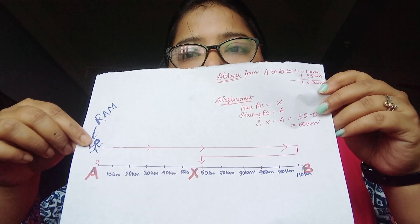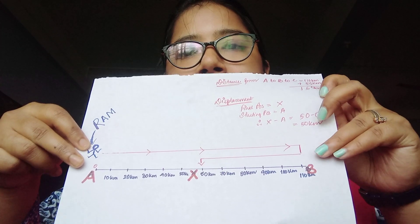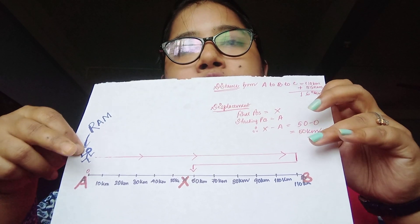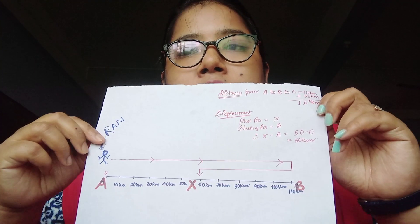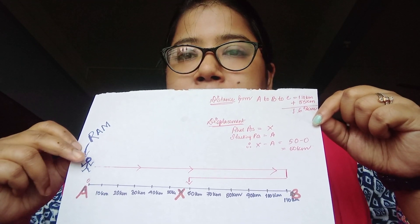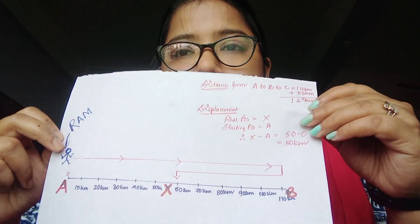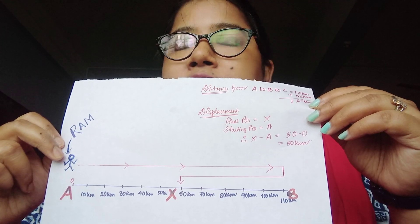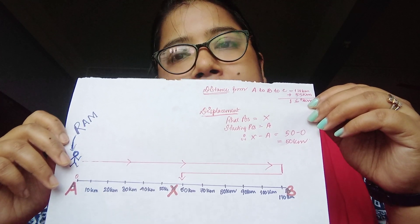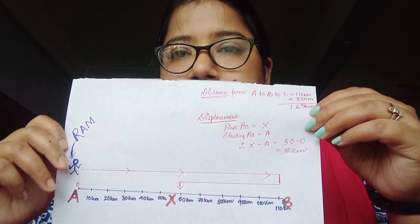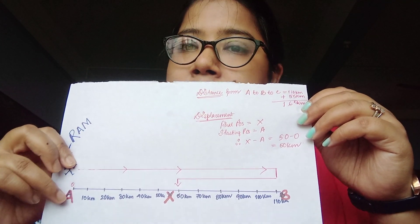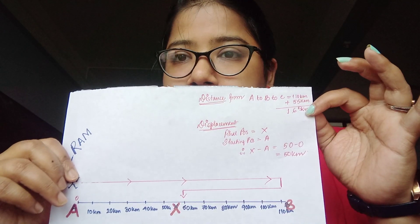Ram is a boy, and Ram is moving from position A to B, and again he is returning from B to position X — X is in the middle. What is the distance covered? From A to B, the distance is 110 km. After returning from B to X, it is 55 km — since X is in the middle. So the total distance covered by Ram is 110 plus 55, which equals 165 km.